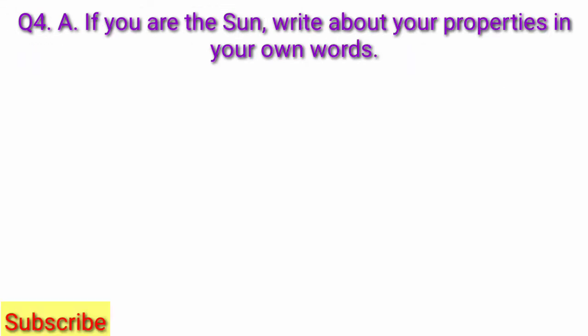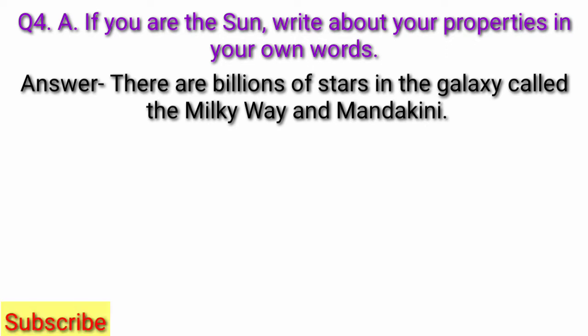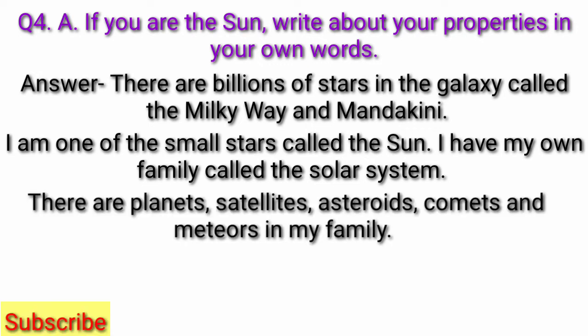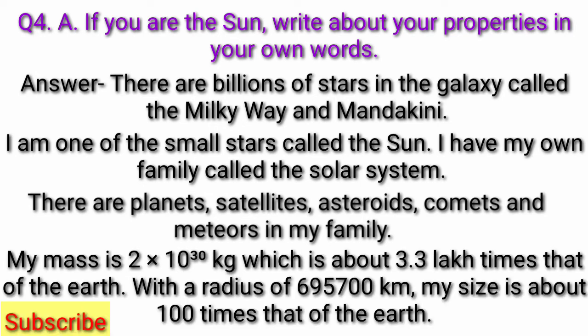Question 4, if you are the sun, write about your properties in your own words. Answer, there are billions of stars in the galaxy called the Milky Way and Mandakini. I am one of the small stars called the sun. I have my own family called the solar system. There are planets, satellites, asteroids, comets and meteors in my family. My mass is 2 multiplied by 10 to the power 30 kg which is about 3.3 lakh times that of the earth. With a radius of 6,95,700 km, my size is about 100 times that of the earth.